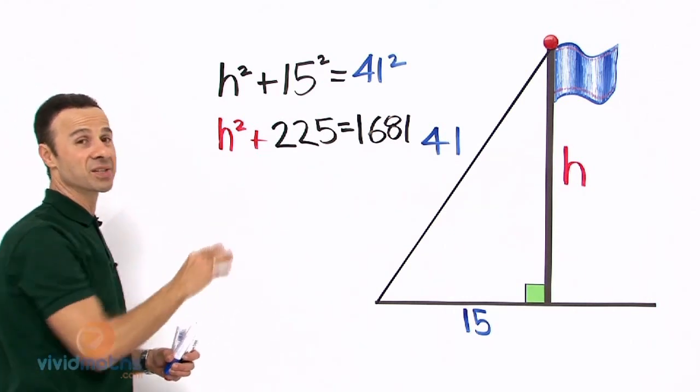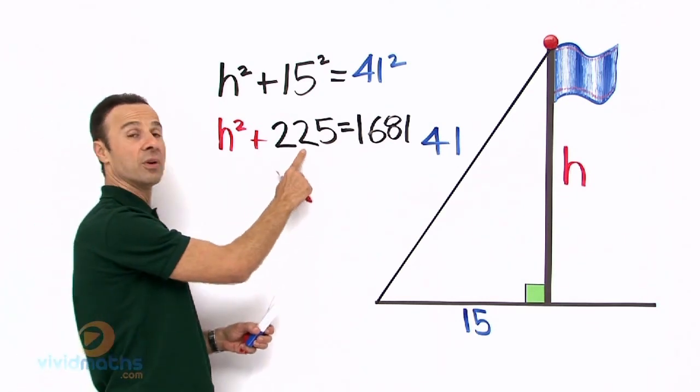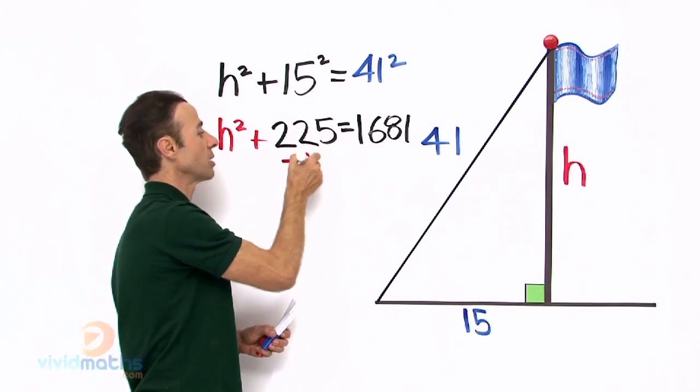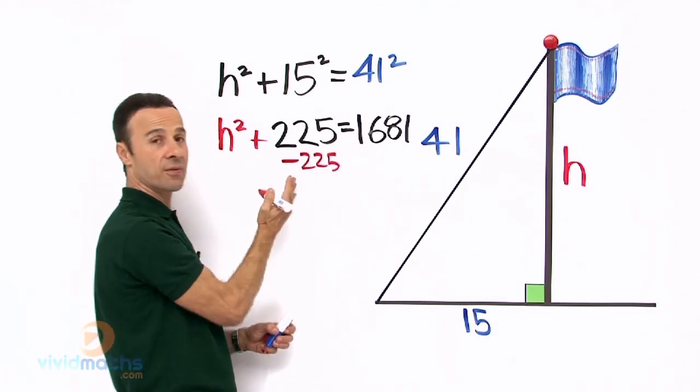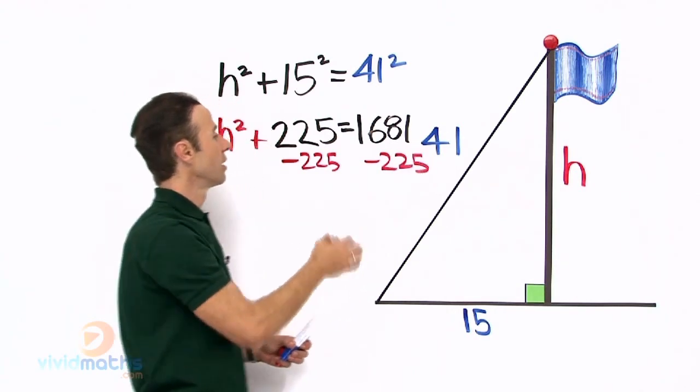Now let us get H squared by itself, so let us take away 225 from both sides. We want to get rid of this number here so we can leave that by itself. So we are going to take away 225 on this side of equals and also on that side. Let us take away 225 now.